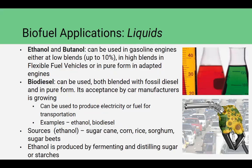Ethanol and butanol are probably two of the bigger liquid biofuels, along with biodiesel. Ethanol and butanol can be used in gasoline engines either at low blends up to 10%, or in high blends in flexible fuel vehicles, or in pure form in adapted engines. You'll actually see some fuels already that have some ethanol, below that 10% margin. Biodiesel can be used both blended with fossil diesel and in pure form, and its acceptance by car manufacturers is growing. Biodiesel in blends below 5% does not require any modification of the engine. At 100% biodiesel, you do have to make some modifications, but it can still work pretty directly.